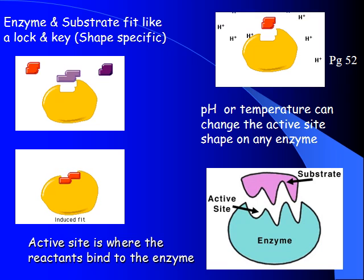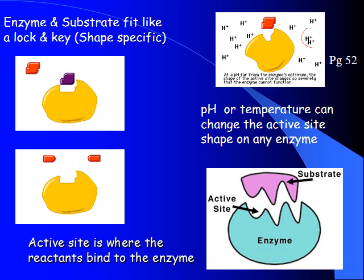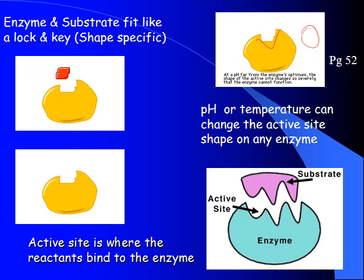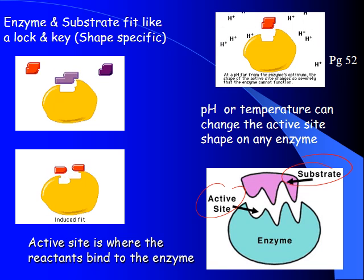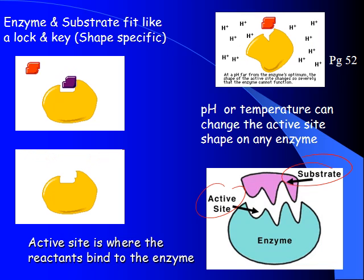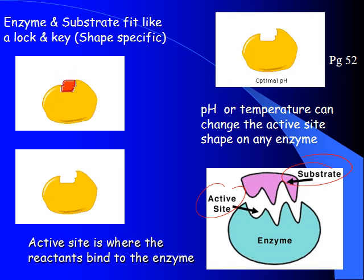Enzymes can be broken down by excessive pH changes. When an enzyme is placed in acid, its shape changes, and when the shape changes, the substrate no longer fits — so the enzyme can't do its job. This is why the amino acid order is so important: order determines shape, shape determines function. Remember: all enzymes are proteins, but not all proteins are enzymes — just like all cheetahs are cats, but not all cats are cheetahs.